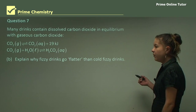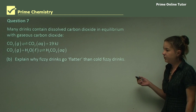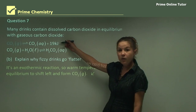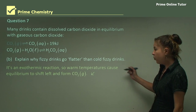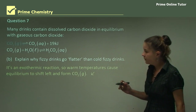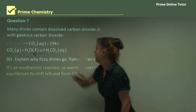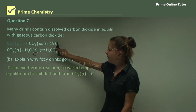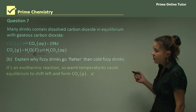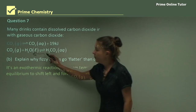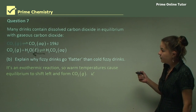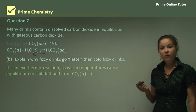Part b: Explain why warm fizzy drinks go flatter than cold fizzy drinks. Since the reaction is exothermic, warm temperatures cause the equilibrium to shift to the left according to Le Chatelier's principle - to disperse the extra heat, the equilibrium shifts left and produces more CO₂ gas. This concludes the discussion about the first-hand investigation of decarbonation of soft drinks.